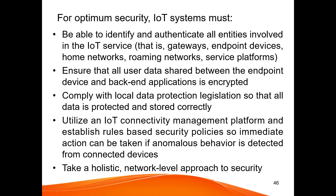Moving towards optimum security — for optimum security, the IoT system should first identify and authenticate all the IoT services. If the IoT system cannot identify and authenticate the IoT services, then we cannot say we are providing optimum security. The IoT services can be your gateways, your endpoint devices, your home networks, your roaming networks, or your service platforms. These are some examples of IoT services where the IoT system has to identify and authenticate. That is the first point of your security.